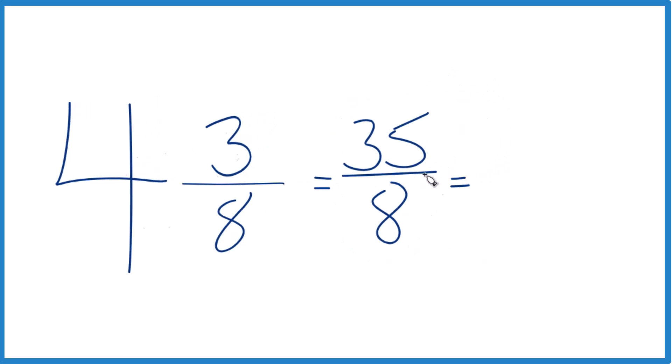You can also check your work here, because 8 goes into 35, 4 times. 8 times 4 is 32, and we'd have 3 left over. We'll bring our 8 across and we get 4 and 3 eighths.